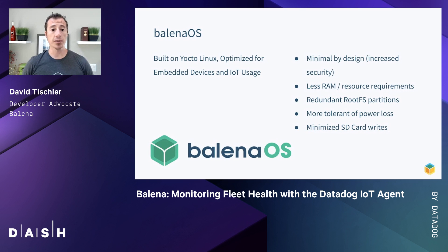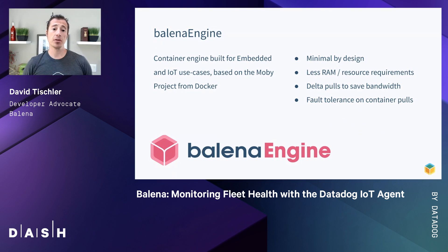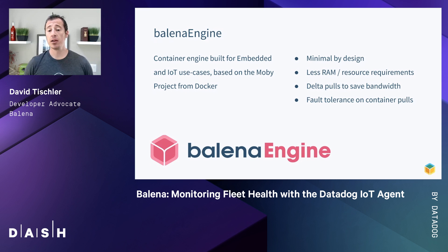Balena OS is built on Yocto, an embedded distribution specifically designed for IoT devices. It's minimal by design — on purpose — which means lower RAM and resource requirements, and we include redundant root FS partitions. So in case an update doesn't go quite according to plans, you can always roll back. Balena Engine is the container runtime — that's what brings up and runs the containers, and it's based on Mobi, the open source contribution from Docker. Balena Engine is also minimal by design, with fewer resource requirements and lower RAM. Some of these IoT devices have as little as 512 megabytes of memory — things that, in a data center, are taken for granted.